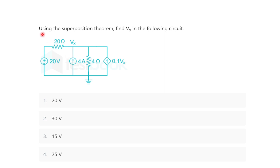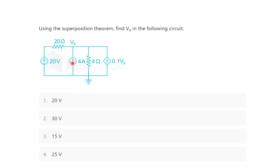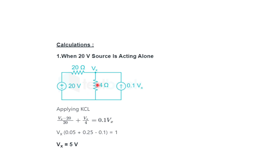Next numerical: using the superposition theorem, find Vx in the following circuit. There is an independent voltage source, an independent current source, and a dependent voltage source (or current source). When the 20V source is acting alone, the current source is open circuited. Applying KCL: (Vx − 20)/20 + Vx/4 = 0.1Vx. Solving gives Vx₁ = 5 V.